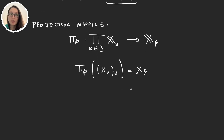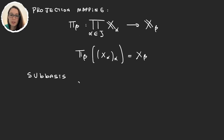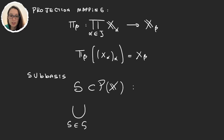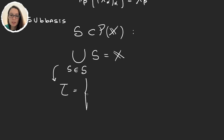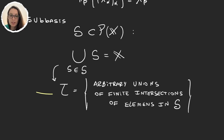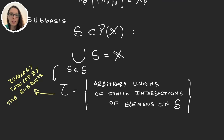The other concept we're going to need is the subbasis. A subbasis is actually quite simple. It's a set S, a collection of subsets of X, such that the union over all elements in S gives us the whole space X. If we find such a collection, we say that S is a subbasis for X, and it gives us a topology τ. This topology is defined as arbitrary unions of finite intersections of elements of S. This set is a topology and it's called the topology induced by the subbasis.